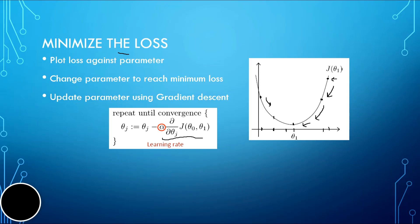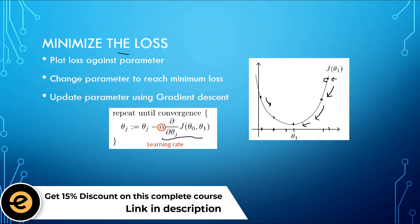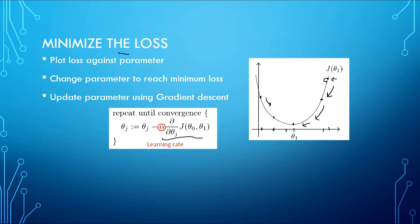For example, we could update the value of theta_1 by a small step or a bigger step. The size of the step we take to update our parameters is determined by alpha — the bigger the value of alpha, the bigger the step, and vice versa. All of the parameter updating — going from a certain value of theta toward the optimal value — is managed by the gradient descent algorithm.